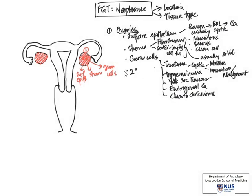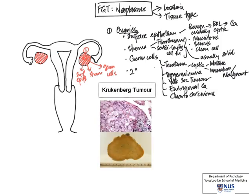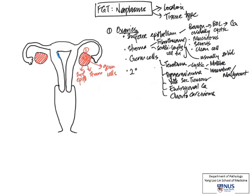One mustn't forget the possibility of metastatic carcinoma going to the ovaries. Classically we have the Krukenberg tumor, which is metastatic gastric adenocarcinoma. This often affects both ovaries, giving rise to bilateral enlargement, and again it is usually solid in gross appearance.